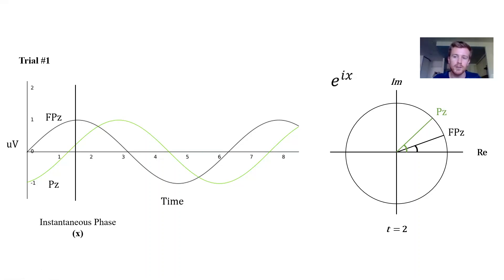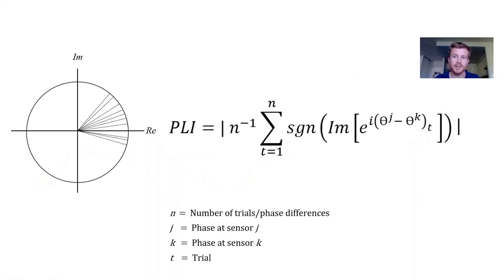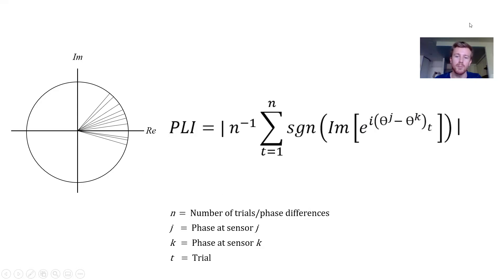Once both signals are represented as complex values on the unit circle, we take the difference between them and represent that difference as a vector on the complex plane. In the PLI equation, we apply Euler's function — E to the i of the phase difference — where we subtract the phase of sensor K from the phase of sensor J (e.g., FPZ minus PZ) at one time point, and we do this for every trial. This gives us a distribution of phase lag vectors across all trials.